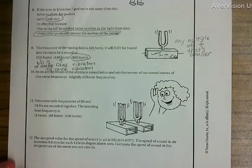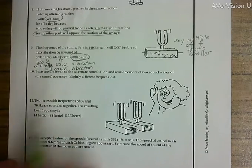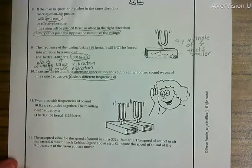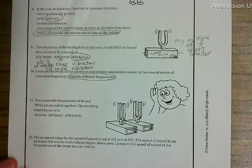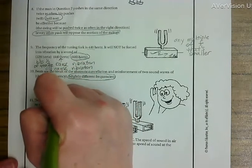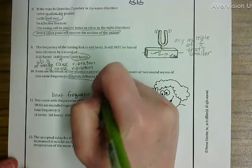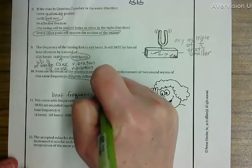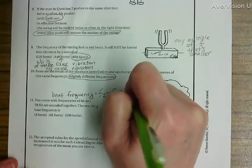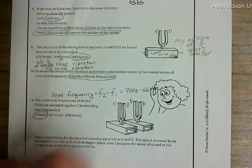Beats are the result of the alternate cancellation and reinforcement of sound waves of... Beats happen when you have slightly different frequencies. Two notes with frequencies of 66 and 70 are sounded together. The resulting beat frequency is always the difference between the frequencies. You'll take frequency 2 and subtract frequency 1. In this case we have 70 hertz minus 66 hertz, which gives us a beat frequency of 4 hertz.